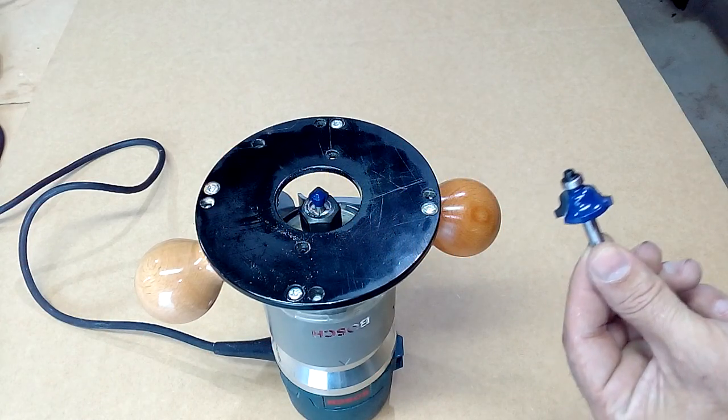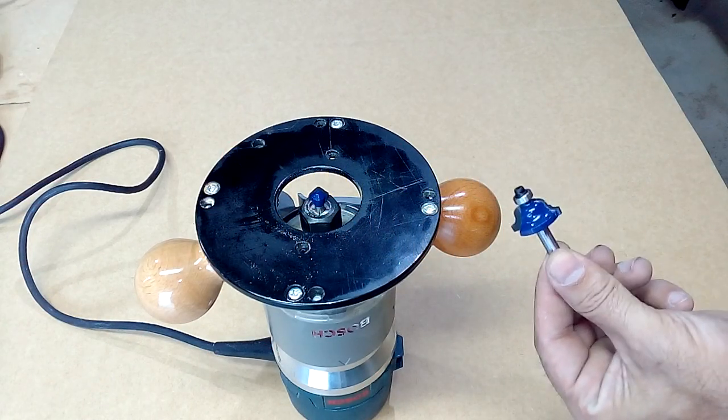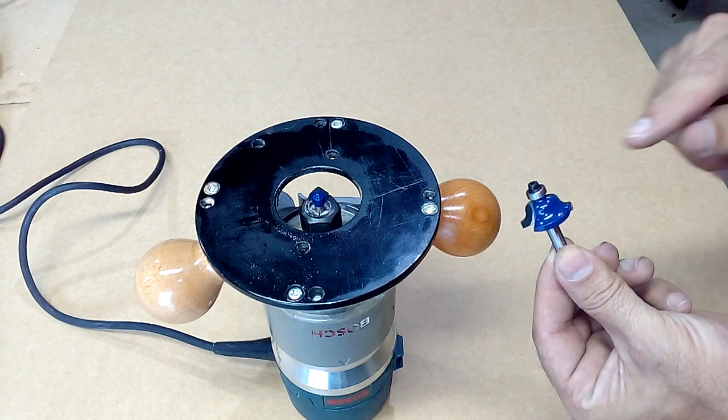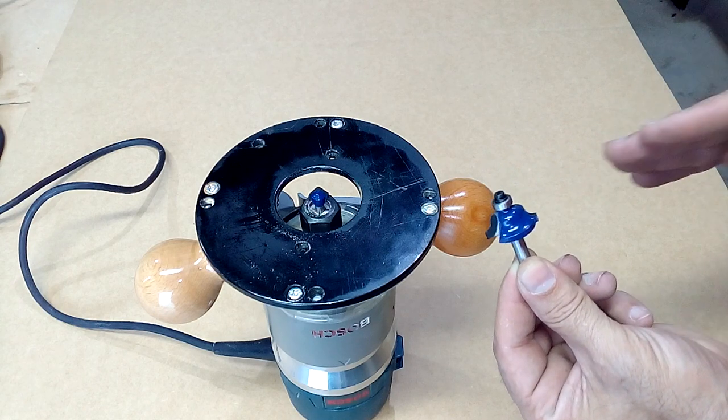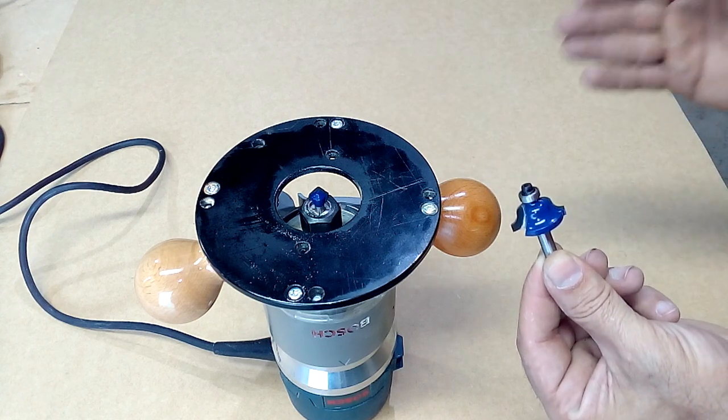When working with your router, it is very important to follow a precise path. Bearing beads allow us to follow the edges of the board or follow a template with the shape we want to cut.